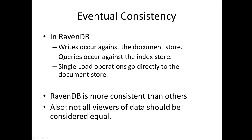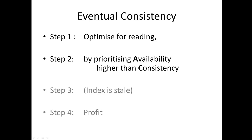Raven is more consistent than others. At this point, if I was to do a load action against Raven and I knew the ID of the document I just inserted, I would get it back — that part would be instantaneous; it wouldn't be waiting for an index update. So to summarize that: we're optimizing for reading by doing this, and we're prioritizing availability over consistency.